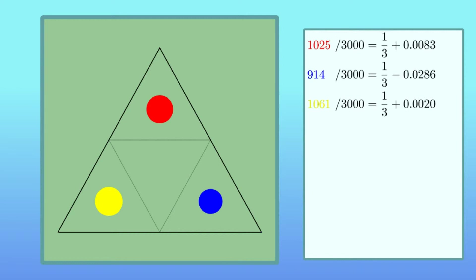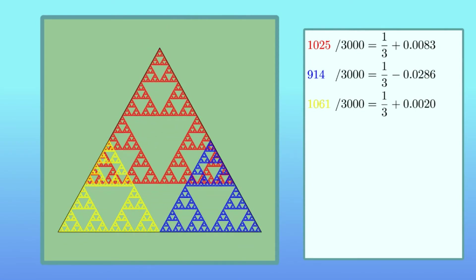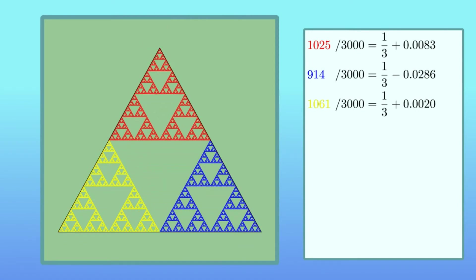Since we already have a good guess about the final image, namely the Sierpinski triangle, this claim sounds very reasonable. Indeed, what's special about the Sierpinski triangle is that it is a union of exactly three copies of itself, shrunk down by a factor of two, which are inside our color triangles. Hence, it is very likely that the orbit of the point will spend around third of its time in each of these triangles.